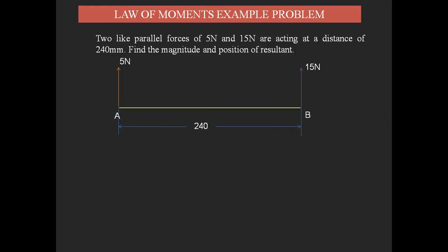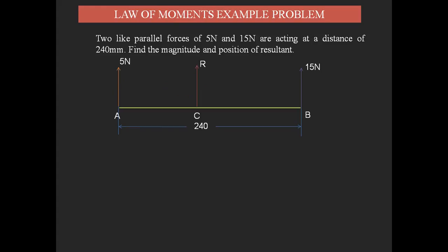The resultant force is the single force that gives the same effect as all the forces acting on a body. These two separate forces can be represented by a single force known as the resultant. I have considered a point C in between A and B, where I assume the resultant force R is acting at a distance x from point A. The remaining distance from B becomes 240 minus x.